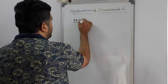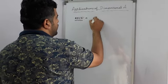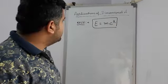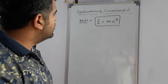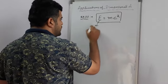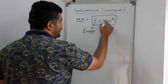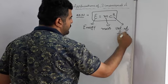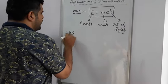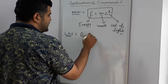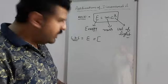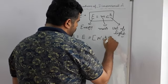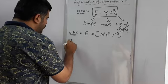Now take a third example, Example 3: Einstein's energy-mass equivalence relation E = mc². E is energy, m is mass, and c is the velocity of light. On the left hand side, energy has the same dimensional formula as work, which is force into displacement, giving M¹L²T⁻².